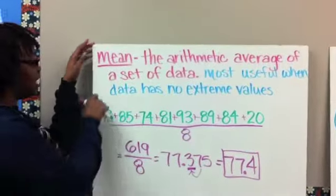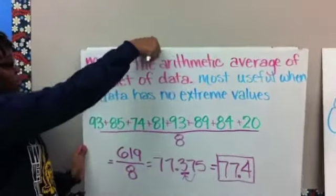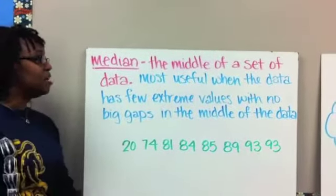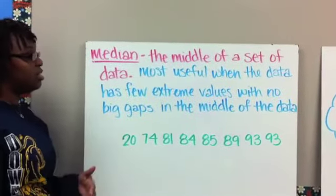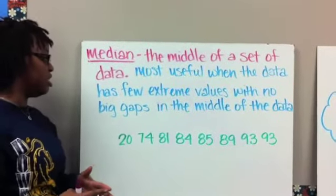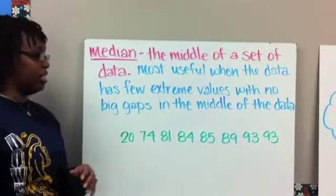All right, let's take a look at the next measure of central tendency, which is median. Median is the middle of a set of data. It's most useful when the data has very few extreme values and there's no big gaps in the middle of the data.